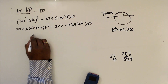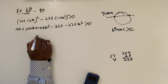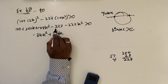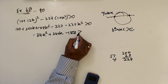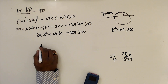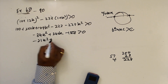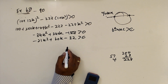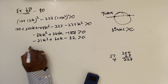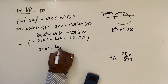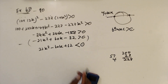When you solve this, dividing by 4 gives -21k² + 60k - 32 greater than 0. Multiplying the whole equation by minus one reverses the inequality sign: 21k² minus 80k plus 32 less than 0.